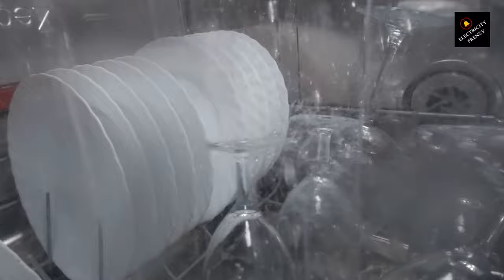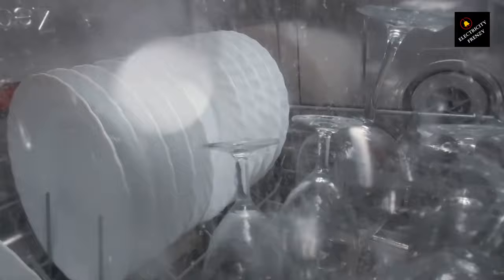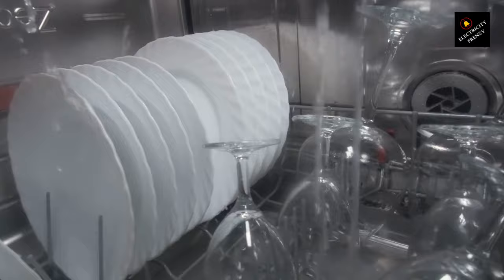Number six: Ground fault or short circuit. A ground fault occurs when an exposed wire comes into contact with a conductive surface, such as the metal frame of the dishwasher. Similarly, a short circuit happens when the live wire and neutral wire come into direct contact. Both situations can cause a breaker trip.